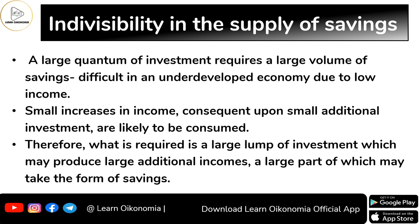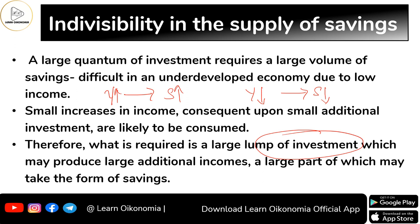The indivisibility in supply of savings shows that a large quantum of investment requires a large volume of savings, which is difficult for underdeveloped economies due to their low income. If income increases, savings increase; when income falls, savings fall too. A small increase in income resulting from small additional investment would be mostly consumed. For this reason, what is required is a lump sum investment, which will provide additional income and thereby increase savings.